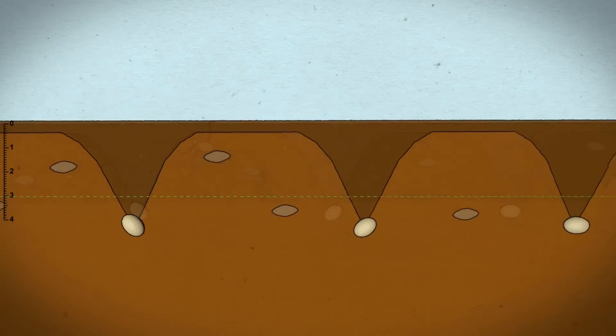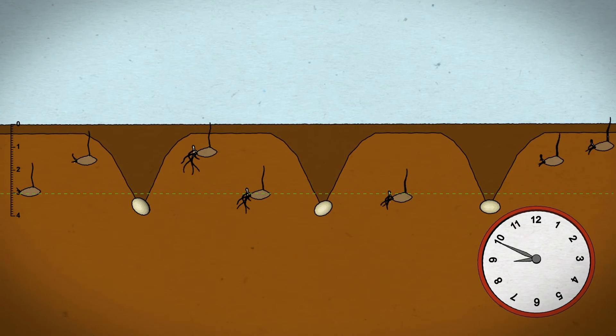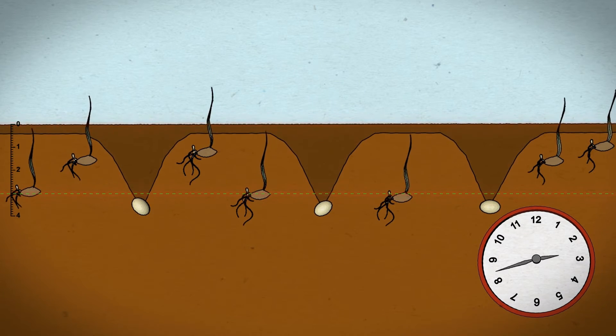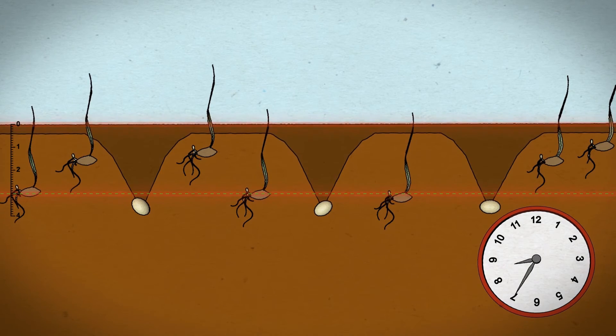It is best to apply pre-embs within 48 hours of drilling. If you wait more than a few days, the roots can grow down below the zone of herbicide activity and shoots can emerge before application.